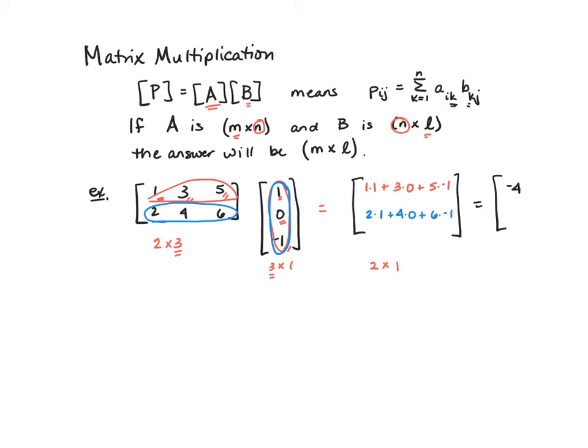So when I do this, I get two plus zero minus six is negative four. And so my answer is a two by one matrix.